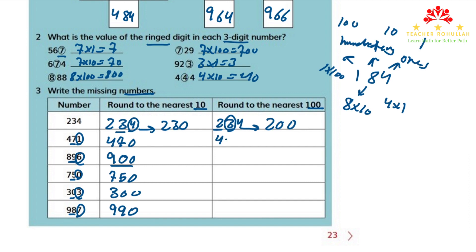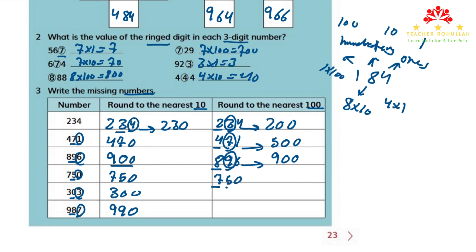The second number is 471: 4 is underlined and 7 is circled. Since 7 is 5 or more, the number rounds up and we get 500. The third number is 896: we underline 8 in the hundreds place and circle 9 in the tens place. Since 9 is 5 or more, the number rounds up and we get 900. The fourth number is 750: 7 is underlined and 5 is circled. Since 5 is 5 or more, the number rounds up to 800.